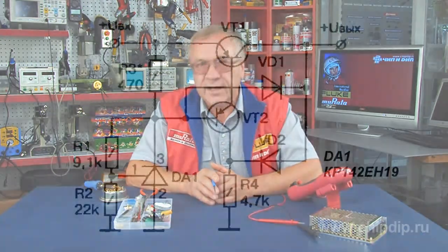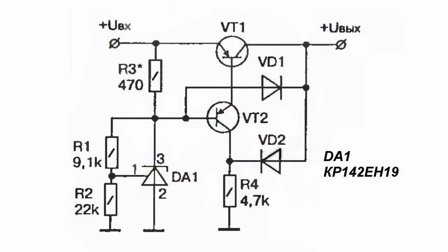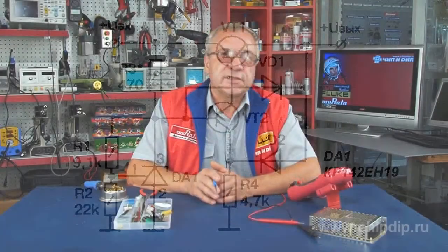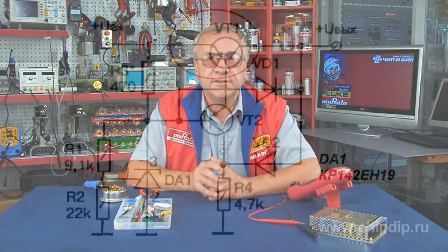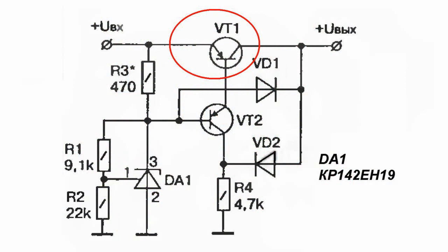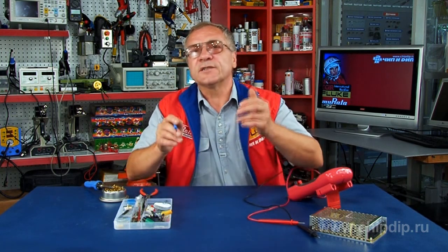We can improve the circuit parameters by replacing the voltage reference diode with the IC stabilizer GR142EN19. The stabilization factor at an output voltage of 3.4V would be equal to about 100. The minimum allowable voltage drop, depending on the parameters of VT1, would constitute 0.4 to 0.6V. The consumption current is determined entirely by the current flowing through DA1 and, depending on the input voltage, would amount to 1 to 2 mA.